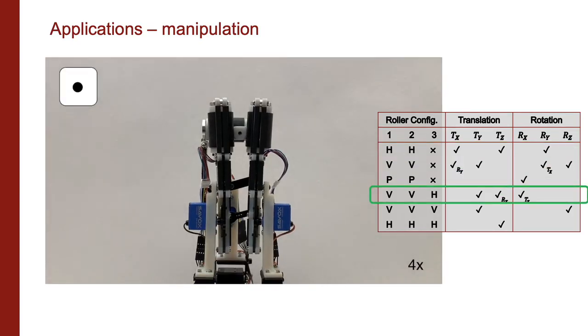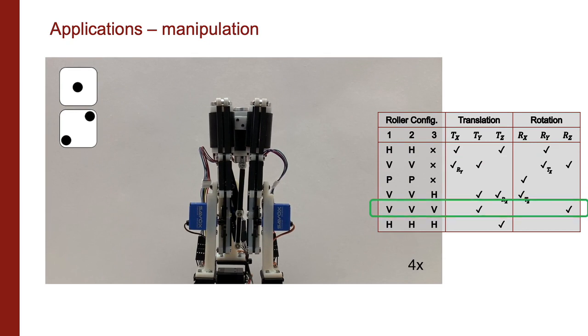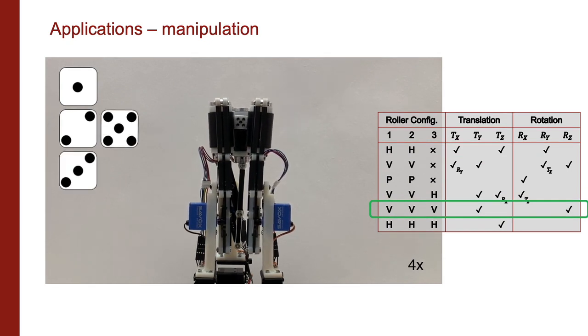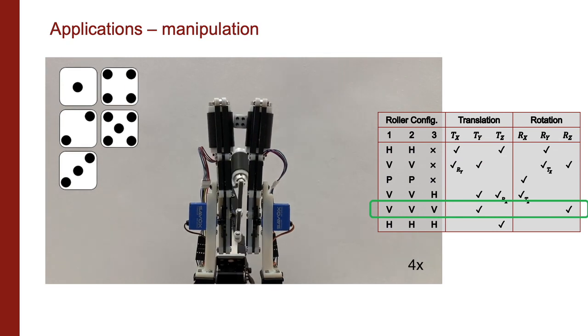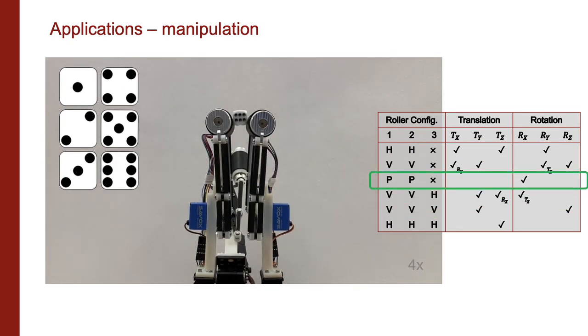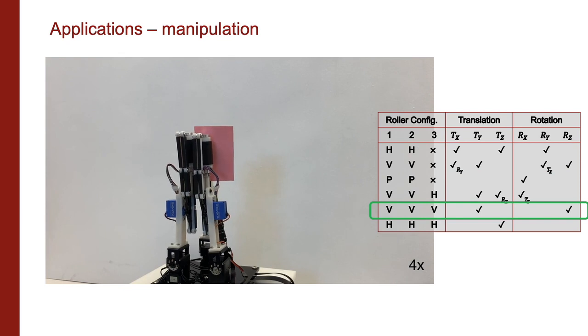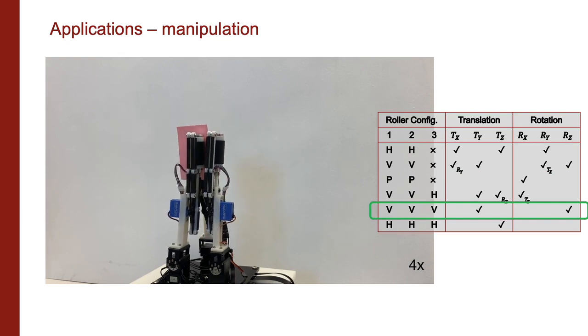In addition to spherical objects, we also explored manipulation of non-spherical objects by combining motions in different roller configurations. Furthermore, the grasper is able to manipulate objects of extreme aspect ratios, such as a piece of paper.